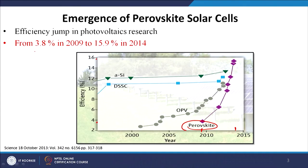From 3.8 percent in 2009 to 15.9 percent in 2014 — only 5 years of research — the efficiency enhancement is huge. The efficiency is sometimes comparable to silicon solar cell efficiency. That is why this material caught the attention of the scientific community, and many people who were working on sensitizer based solar cells have started working on perovskite based solar cells.